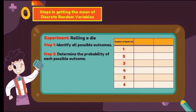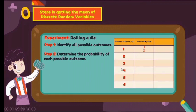Step 2: determine the probability of each possible outcome. For the second column, fill in the probability P(X). You have to consider the probability of every spot on the die. For getting 1, you have 1 over 6, since there is only one face showing 1 and you have 6 possible outcomes. The same applies for 2, 3, 4, 5, and 6 — each has 1 out of 6 chances.